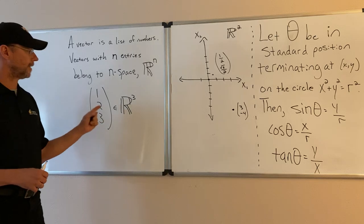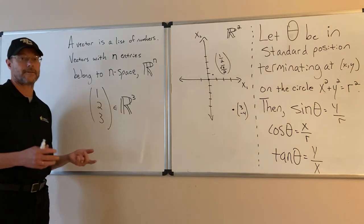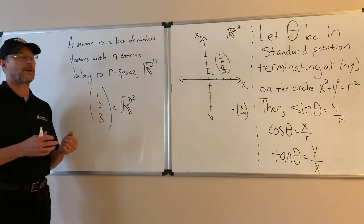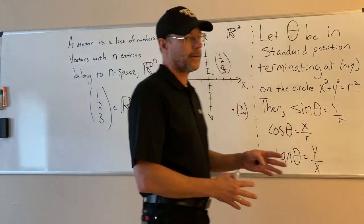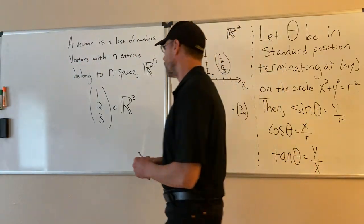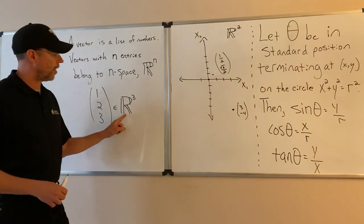So here the list of numbers 1, 2, 3 is a vector. It has three entries, so it belongs to three-dimensional space. That's the space I'm walking around in right now. And we denote three space with R^3.